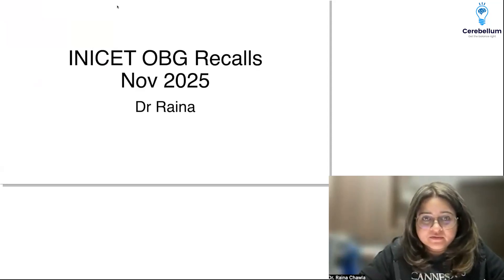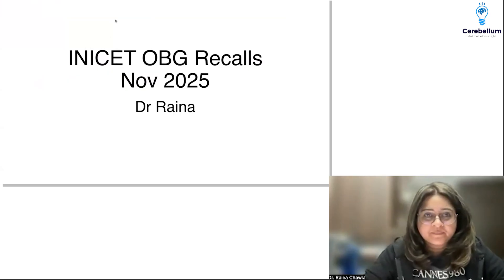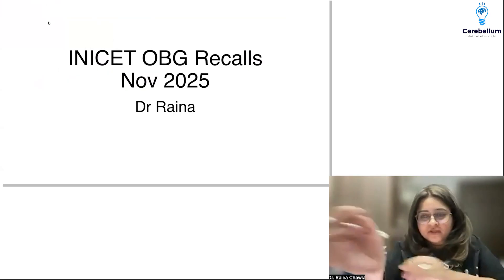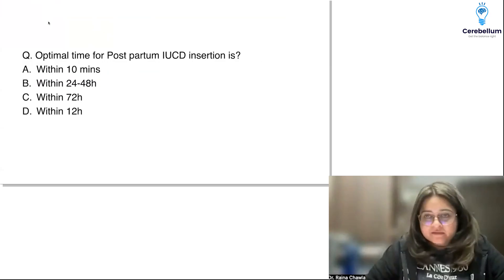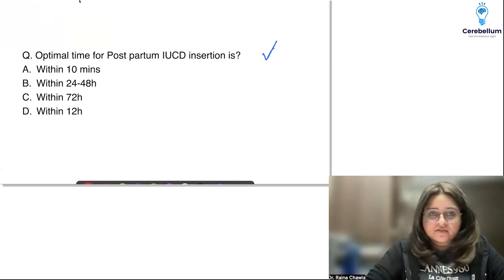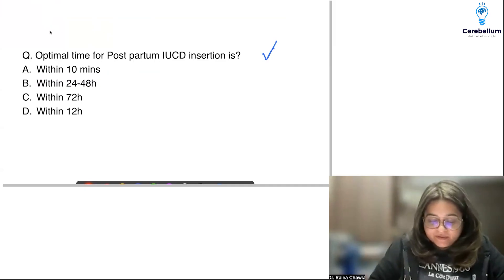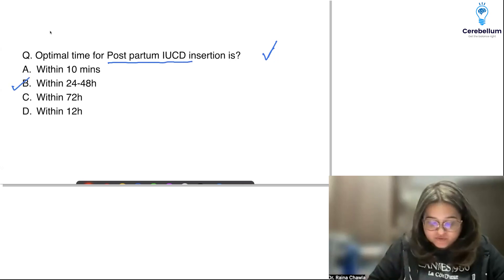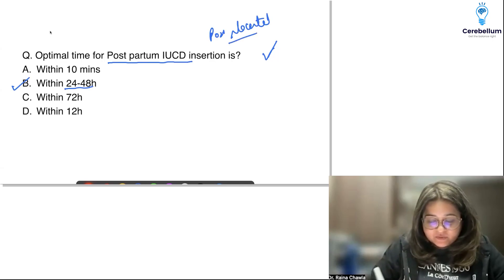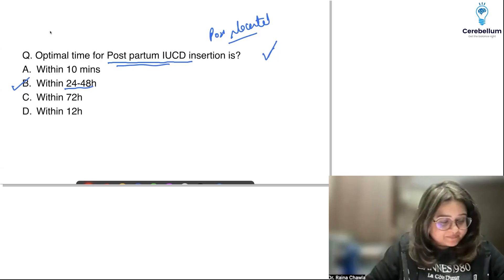Hi everybody. From obs and gynae, most of you would have been quite pleased to see the questions — not much asked, surprisingly, just 10 or 11 questions. This was a repeat question, asked very often in all exams. The same question came in last year's EPG also. The optimal time for postpartum IUCD insertion is within 48 hours. Remember, post-placental is within 10 minutes, but postpartum is within 48 hours.